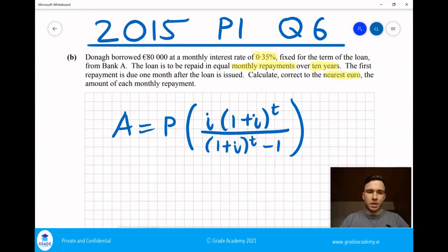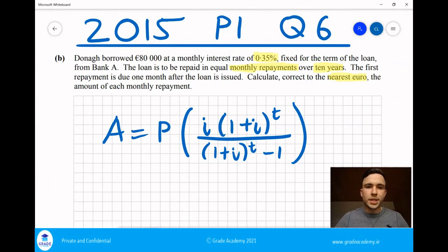So that is our formula, and we're going to have a go at a question here. As you can see, I've already written down the formula. We're going to have a go at the 2015 paper one, question six, part B.